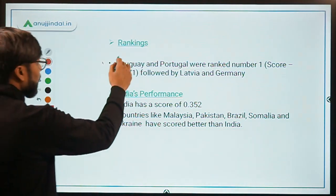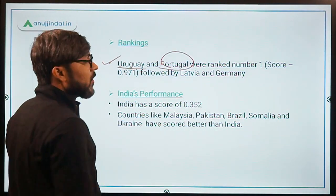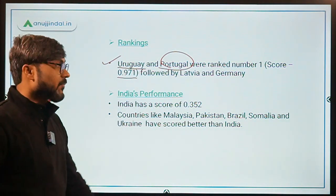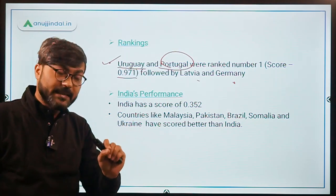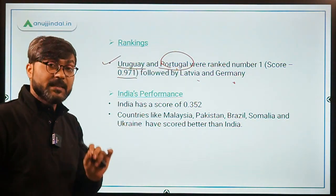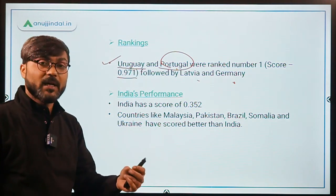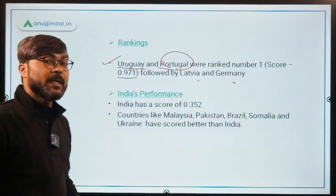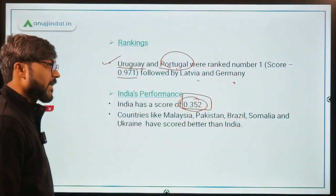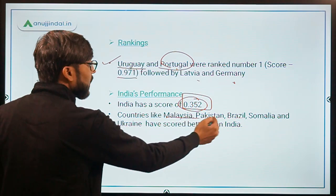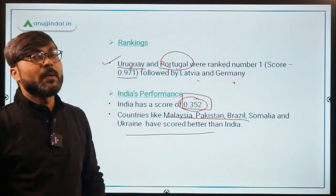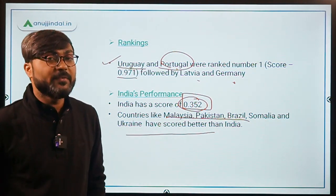Talking about the rankings: Uruguay and Portugal are at rank number one with a score of 0.971, followed by Latvia and Germany. India has a score of 0.352, which is low. Countries like Pakistan, Brazil, Somalia, and Ukraine have scored better than India. India's academic freedom score of 0.352 is quite low, on a scale where 0.1 is the minimum and 1 is the maximum.